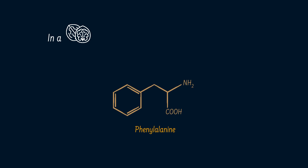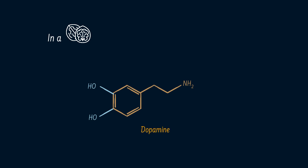In a nutshell, the journey starts from phenylalanine, that is para-hydroxylated to tyrosine, which is meta-hydroxylated to dopa, which is then decarboxylated to dopamine, that is beta-carbon hydroxylated to noradrenaline, to be methylated to adrenaline.